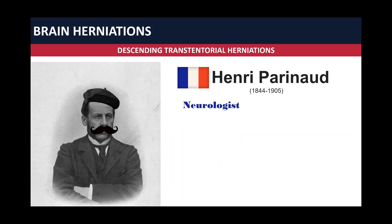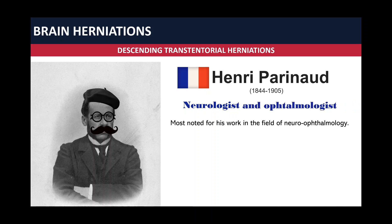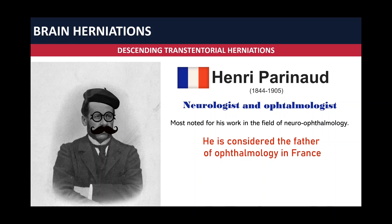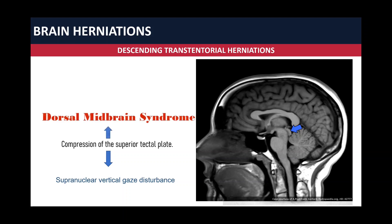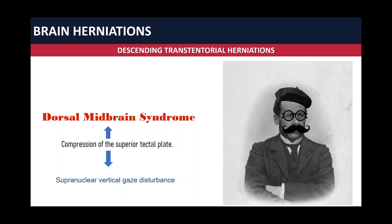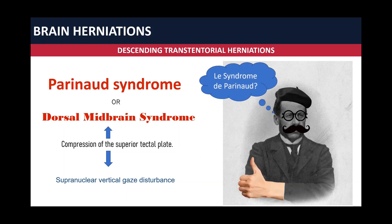But Henri Parinaud had other passions — he was an ophthalmologist as well. That's why he is most noted for his work in the field of neuro-ophthalmology, and he is considered the father of ophthalmology in France. Parinaud discovered that compression of the superior tectal plate, indicated by the blue arrow, leads to a supranuclear vertical gaze disturbance. This condition should be called dorsal midbrain syndrome, but Parinaud called it le syndrome de Parinaud — in English, Parinaud syndrome.